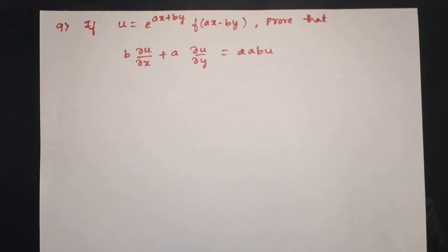Question: If u is equal to e power ax plus by, f of ax minus by, prove that b into ∂u/∂x plus a into ∂u/∂y is equal to 2abu.